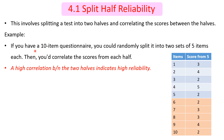For example, with a 10-item questionnaire, we can randomly split into two sets of five items each — either by taking the odd numbers or by taking items 1 to 5 and 6 to 10. We then correlate the scores from each half, and the correlation tells us the split-half reliability.